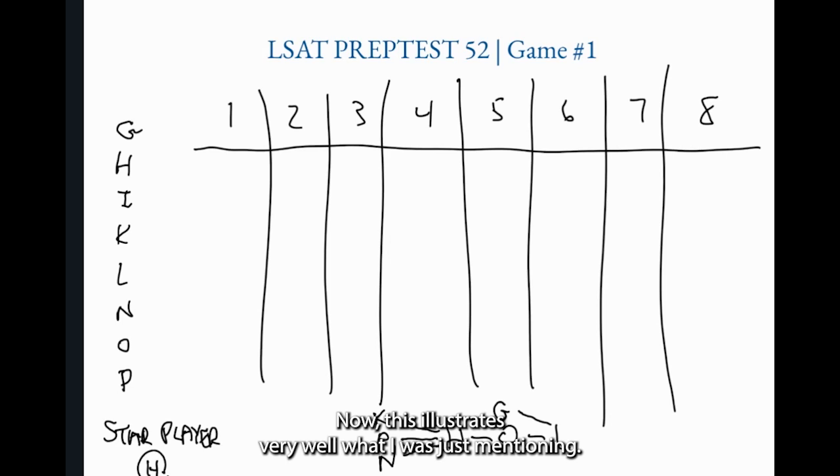Now this illustrates very well what I was just mentioning. The only thing we know for sure about G is that it is before L. There are no other lines connecting G to anything else. Look at G carefully and ask yourself how many players must be before G. I hope you answered zero. None of them must necessarily be before G. And so imagine, and go ahead and imagine this visually. Imagine G kind of floating to the left so that it's actually to the left of K, P, and N. That is possible. It's not definite because no line indicates that, but it is possible.